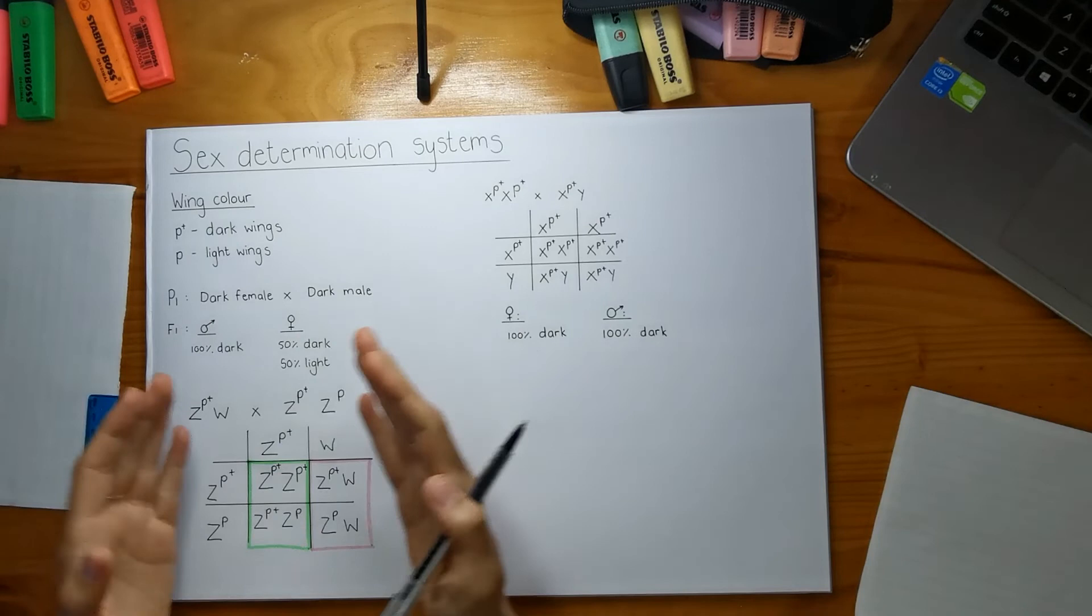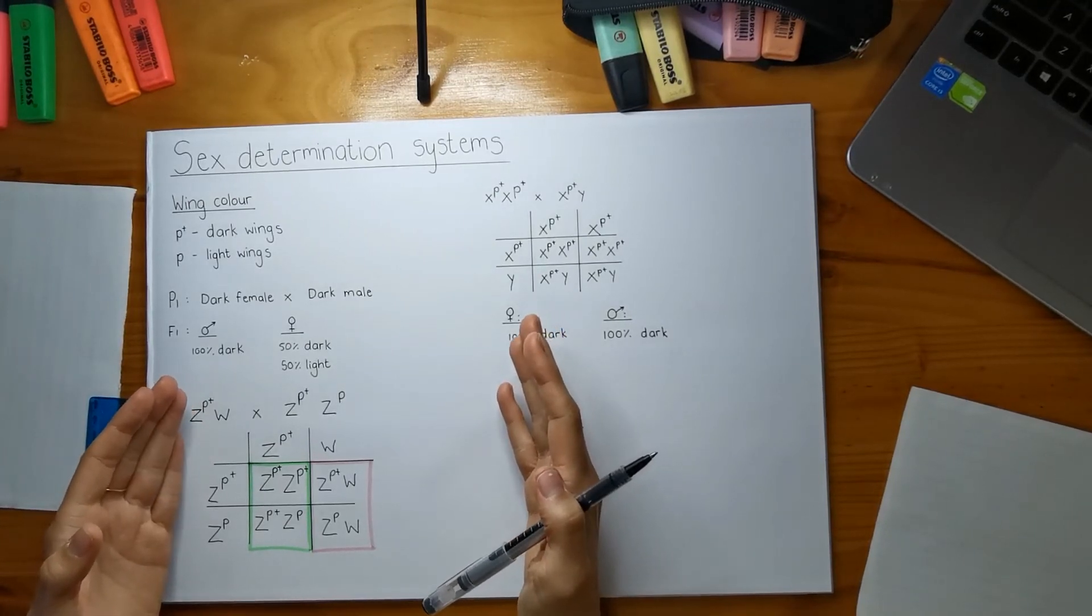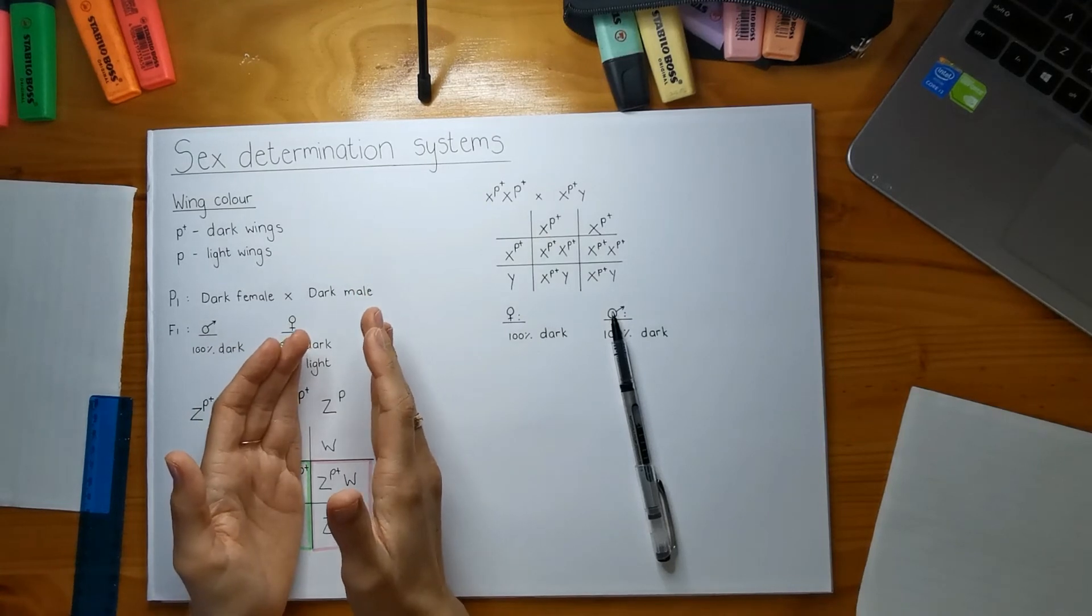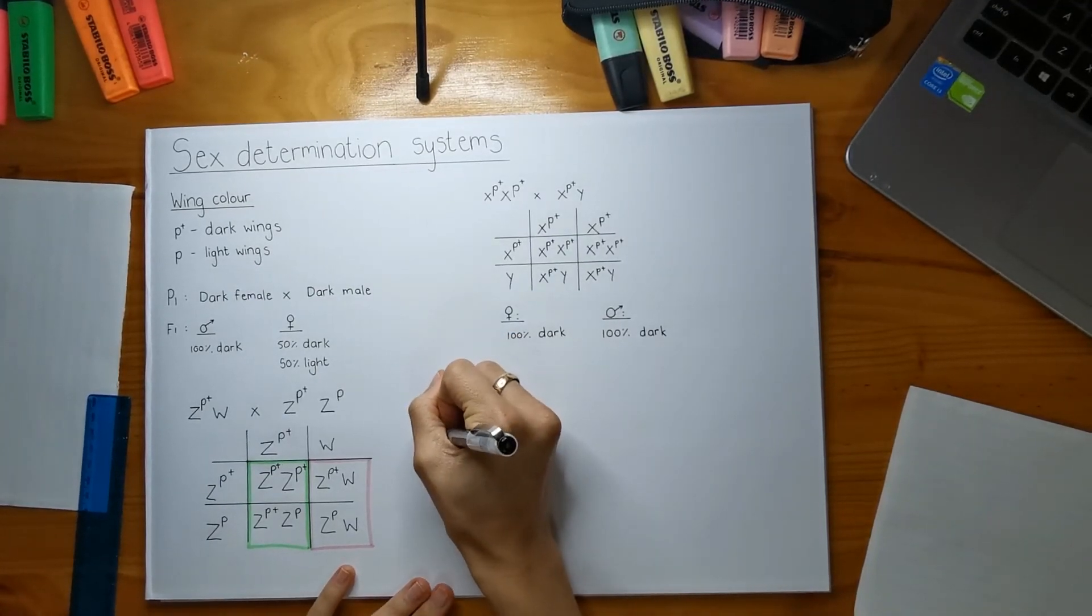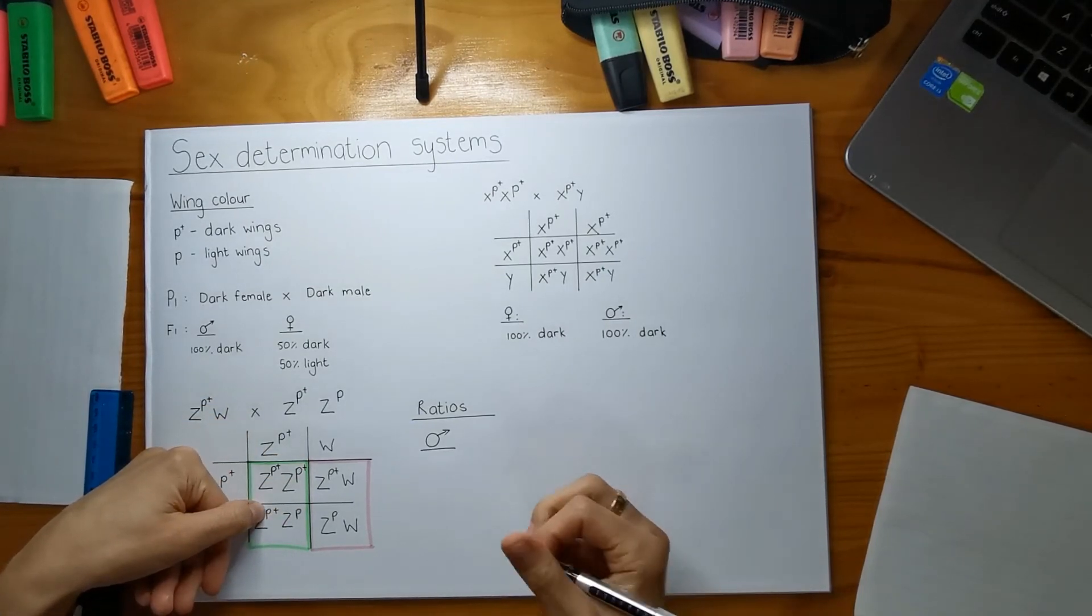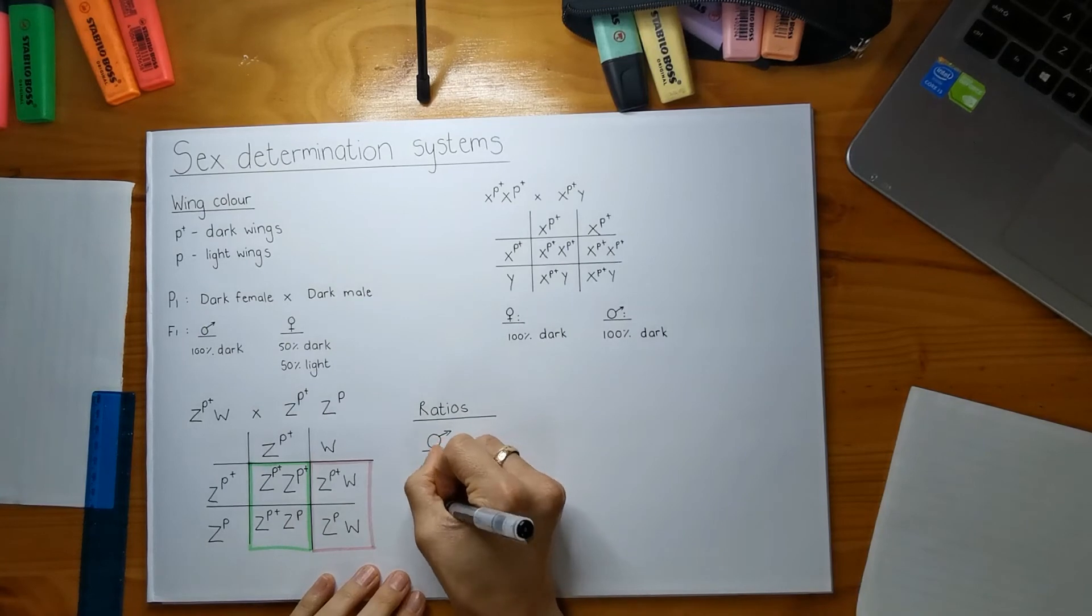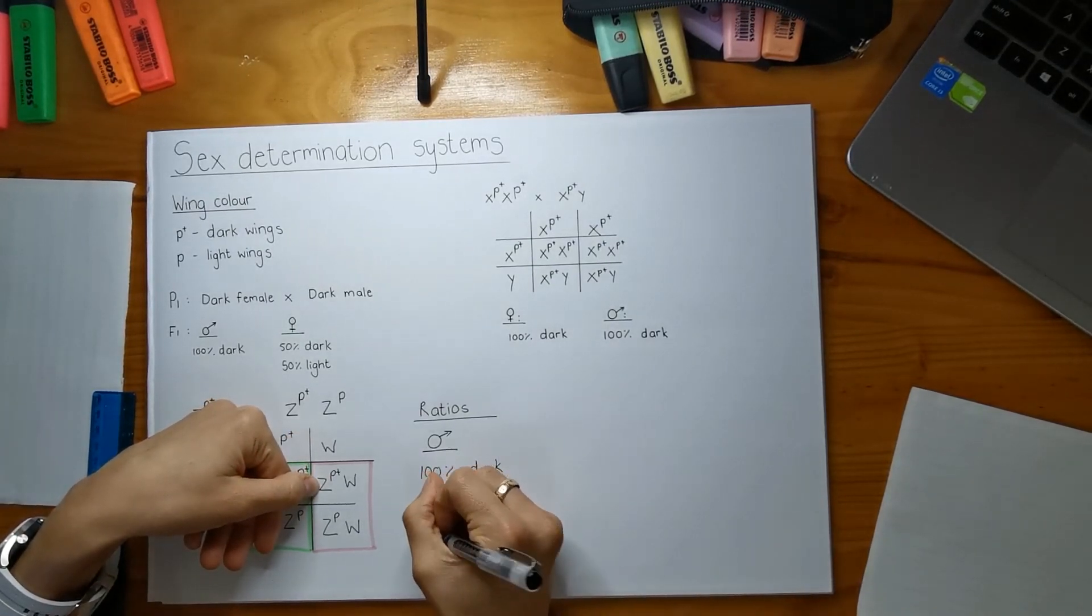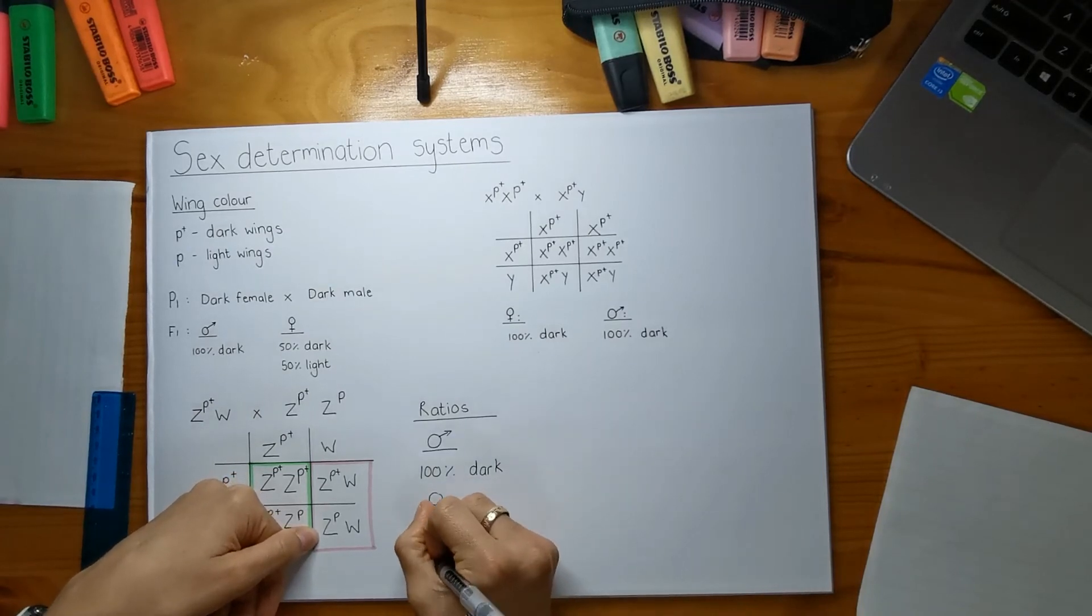Remember what I did in the previous video. When you're dealing with questions that have to do with the actual sex of the individual, then we break up our ratios. So we look at the males alone and then we look at the females alone when we're doing our ratios. I'm going to specifically deal with my males first. If we look at our males we see that they both have the wild type allele and this other individual also has the wild type allele. So we know that 100% of them are going to be dark. And if we look at our females, this one is going to be wild type and dominant with dark wings, so half are going to be dark. And this one is going to have light wings, so the other half of the females are going to be light.